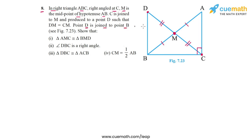Point D is joined to point B. We have to show four things: triangle AMC is congruent to triangle BMD; angle DBC is a right angle; triangle DBC is congruent to triangle ACB; and CM is equal to half of AB. So let's start with part one.